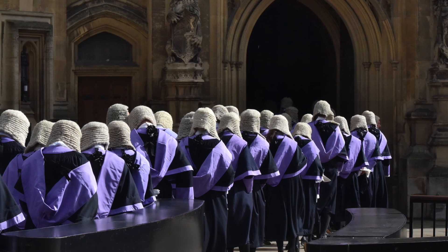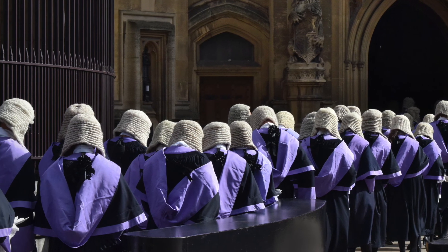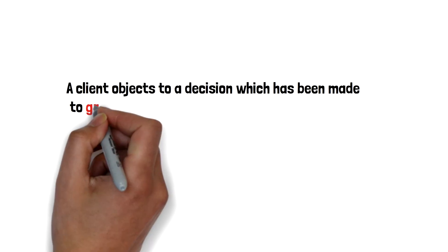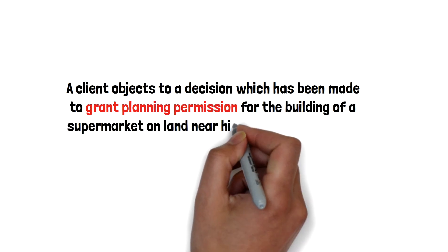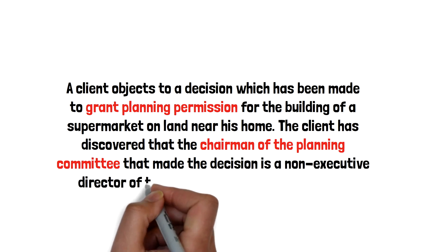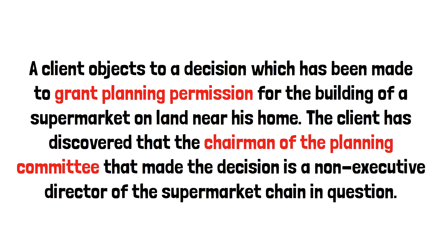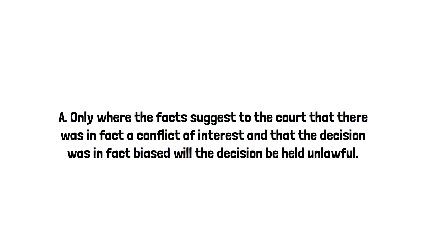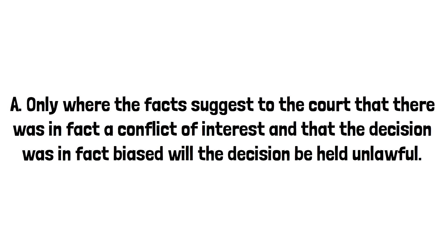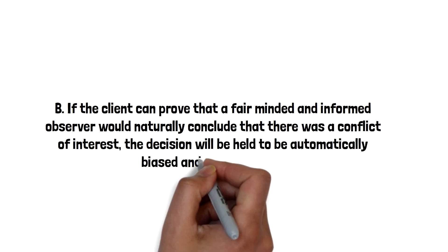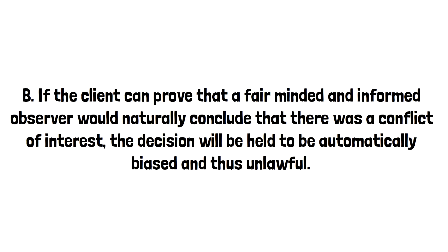Here is an actual sample question for the SQE for this topic — one published by the SRA as being the sort of question you can get in the SQE for this subject. A client objects to a decision which has been made to grant planning permission for the building of a supermarket on land near his home. The client has discovered that the chairman of the planning committee that made the decision is a non-executive director of the supermarket chain in question. Which of the following best describes the status of this decision? Option A: Only where the facts suggest to the court that there was in fact a conflict of interest, and that the decision was in fact biased, will the decision be held unlawful? Option B: If the client can prove that a fair-minded and informed observer would naturally conclude that there was a conflict of interest, the decision will be held to be automatically biased and thus unlawful?